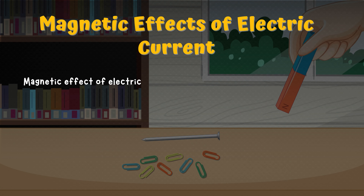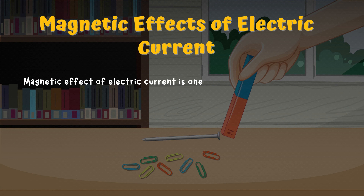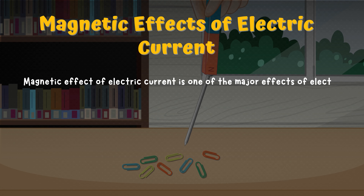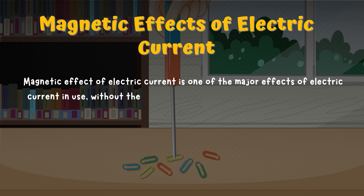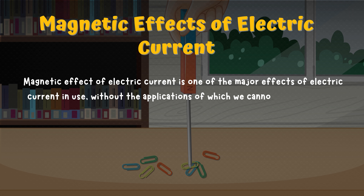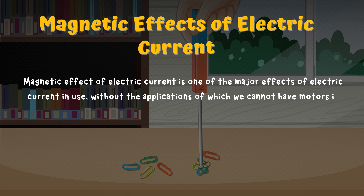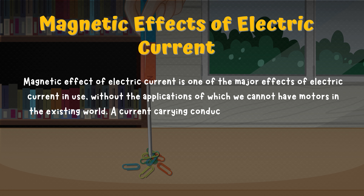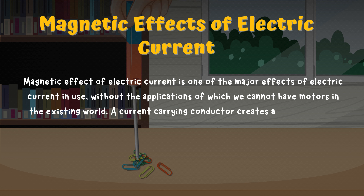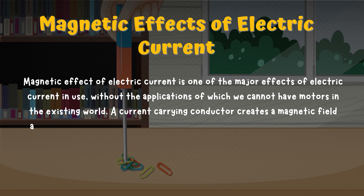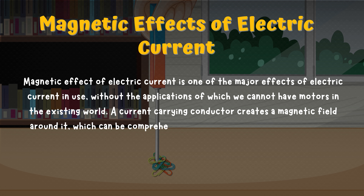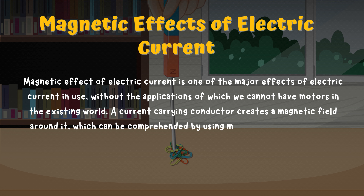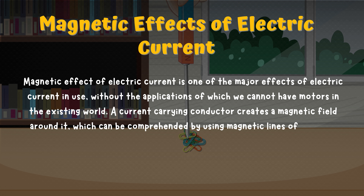Magnetic effect of electric current is one of the major effects of electric current in use, without the applications of which we cannot have motors in the existing world. A current-carrying conductor creates a magnetic field around it, which can be comprehended by using magnetic lines of force or magnetic field lines.